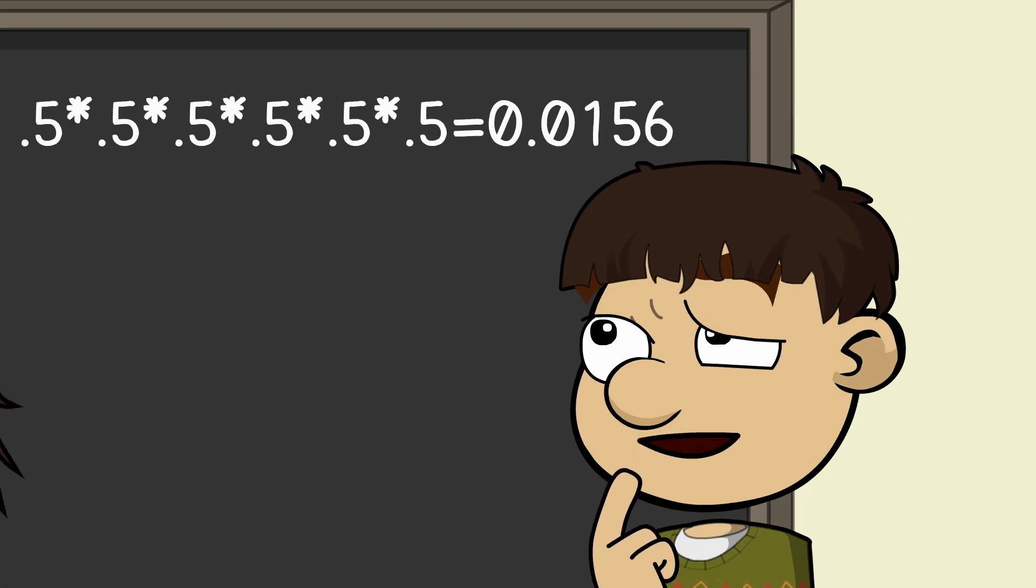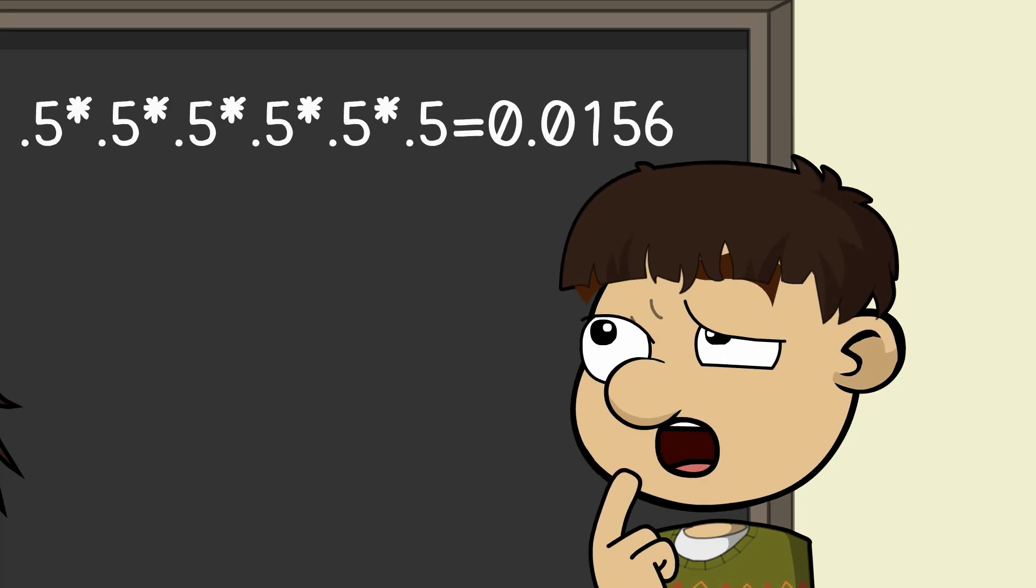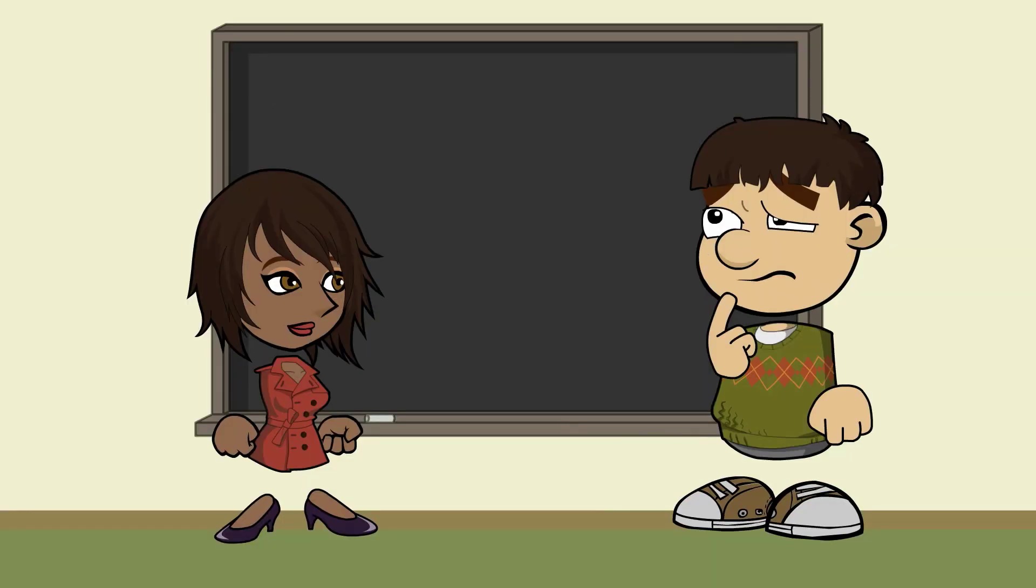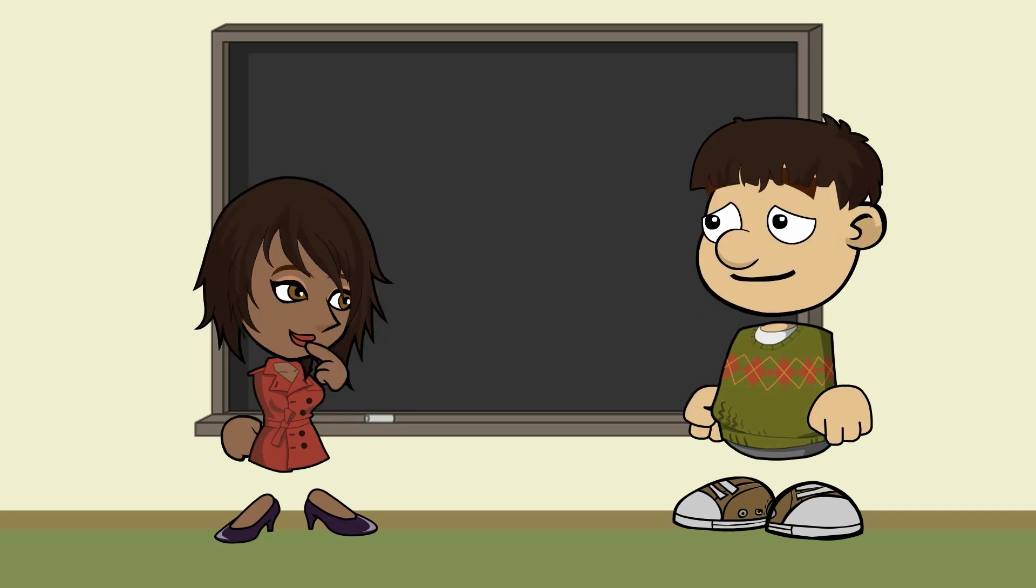Because the chance of getting six heads in a row if the coin is fair would be about 1.6%. Almost 99 to 1 odds against that. So, getting six heads in a row would be enough evidence to make you reject the null hypothesis that the coin is fair, and you would accept the alternative. Yes. I would bet the coin is not fair if you got six heads in a row.